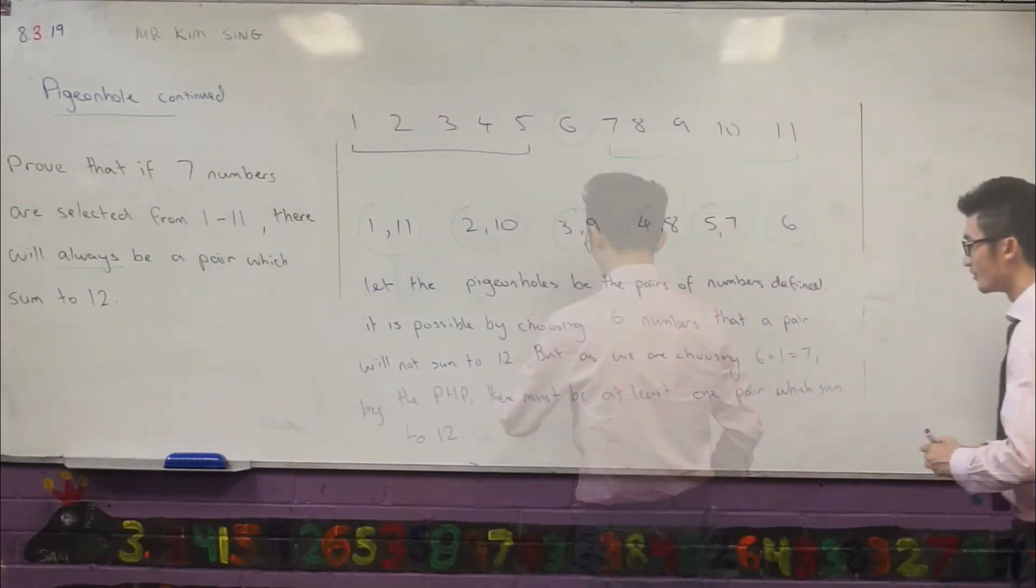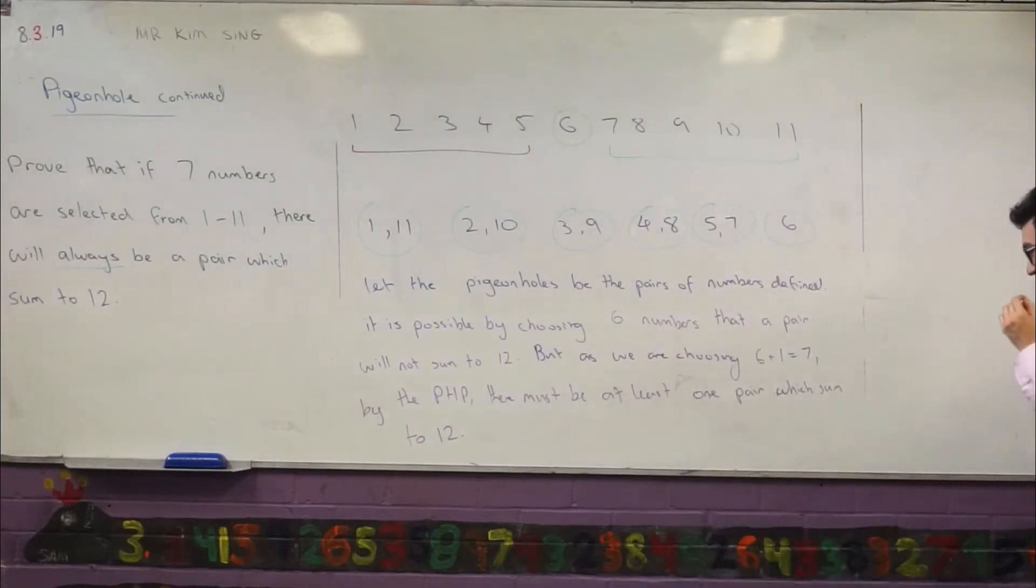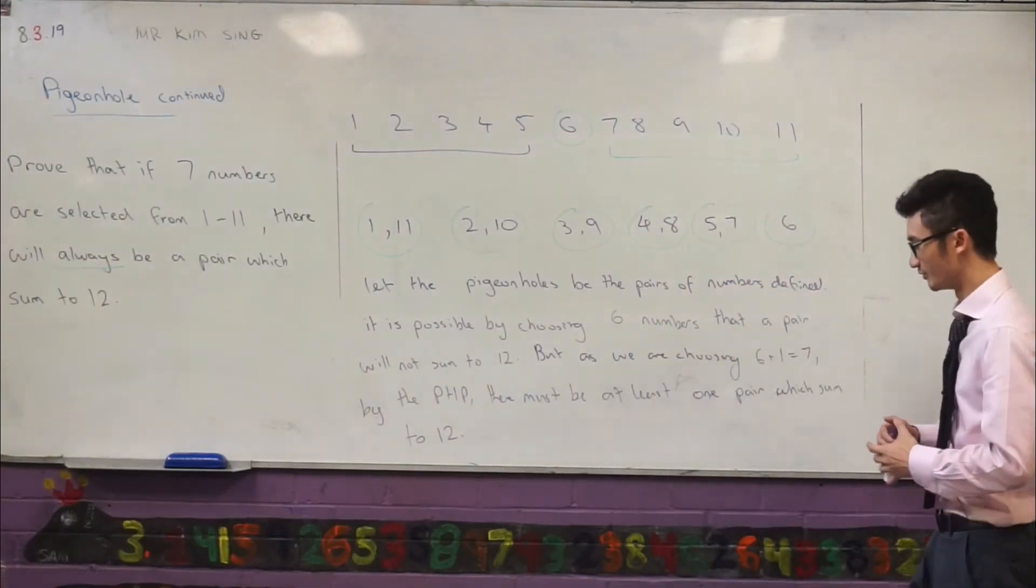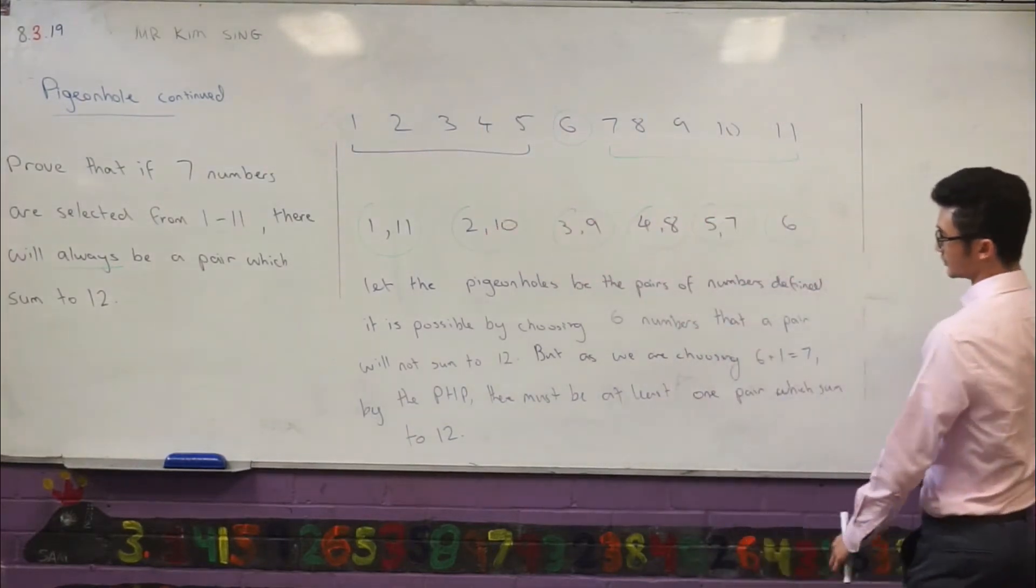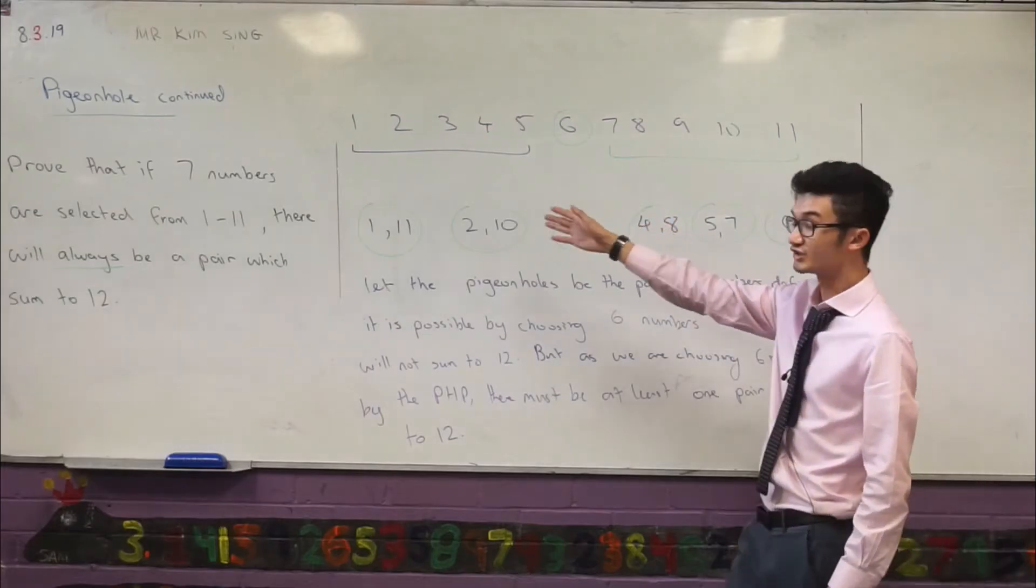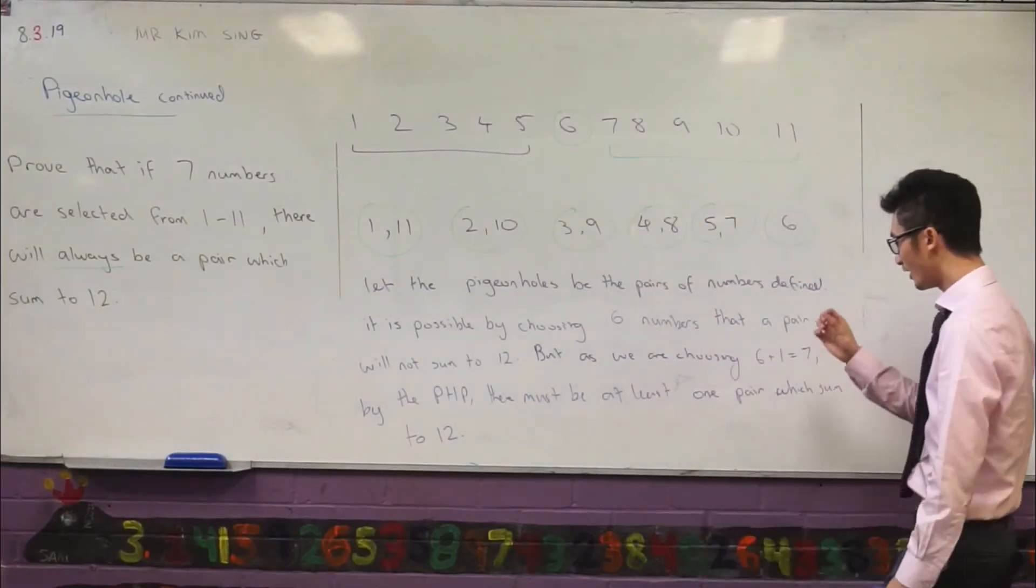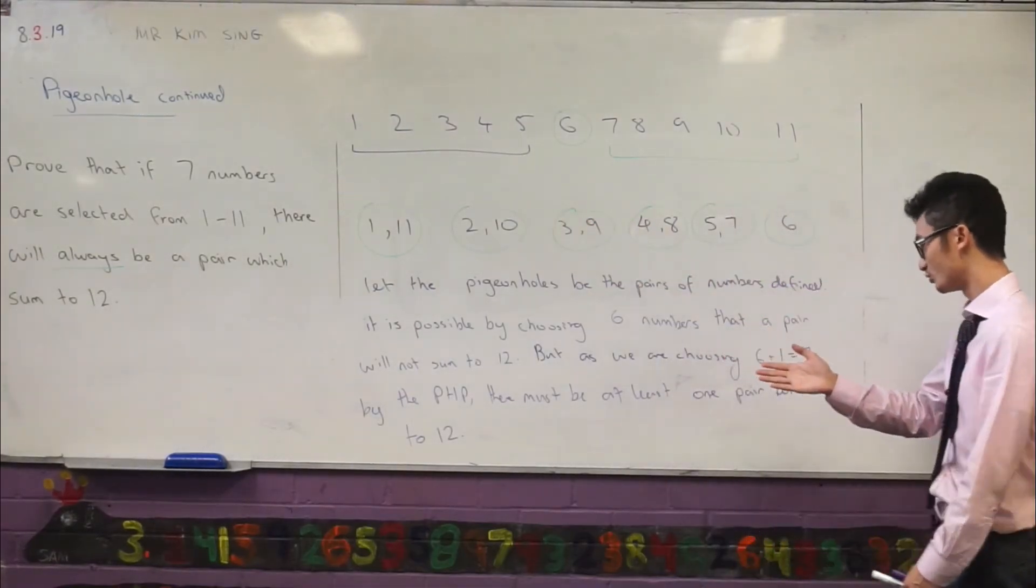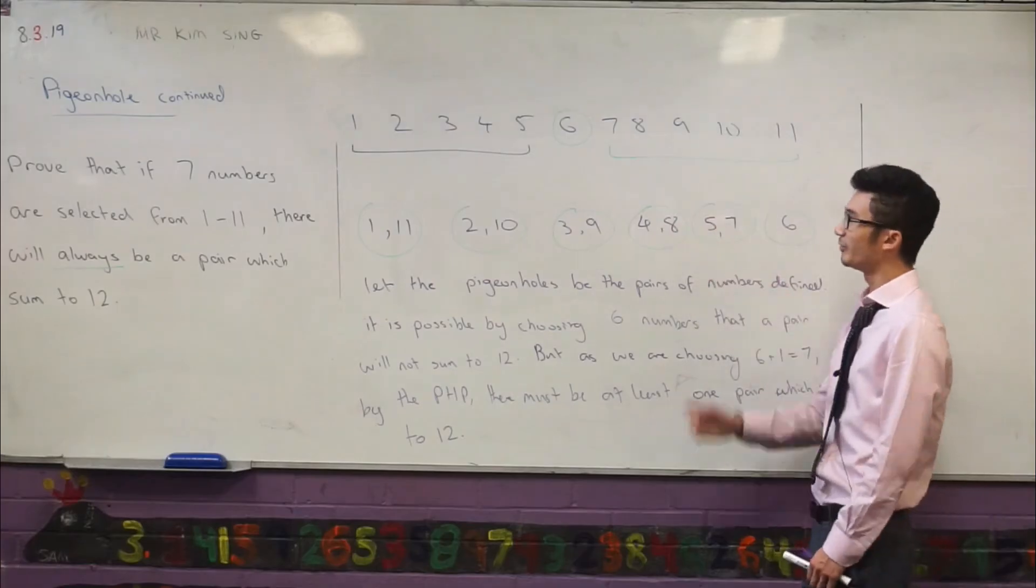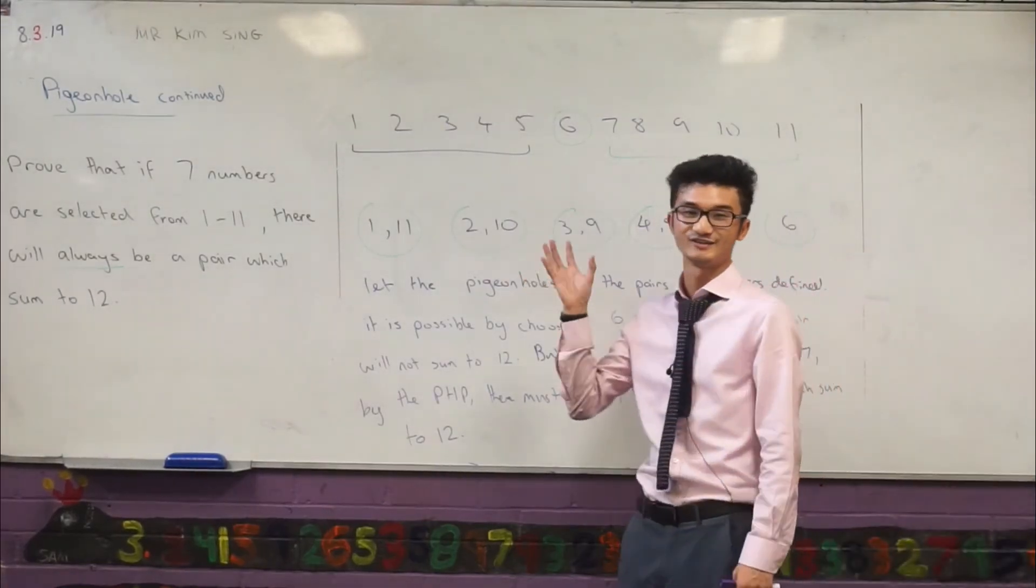But as we're choosing 6 plus 1 equals 7, by the pigeonhole principle, there must be at least one pair which sum to 12. So I've kind of done a few things here. I've clearly laid out what my pigeonholes actually are. I've shown that choosing 6 numbers will not be enough because you could choose 1 from each hole. But as we are choosing 6 plus 1 equals 7, any additional one will mean by the pigeonhole principle there must be at least one pair in this group which sums to 12. So that's how you can answer a question like that.